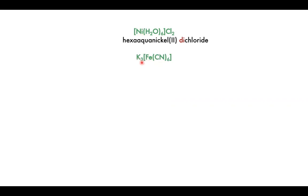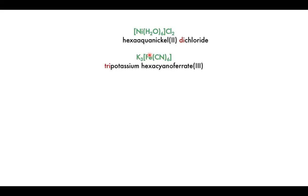The next part is tripotassium hexacyanoferrate(III). This is iron(III) because cyano ligands are minus one each — six of them gives minus six total, plus three gives minus three total for the complex — and we balance that with three potassium ions to get a neutral overall complex. By combining knowledge that potassium is always plus one and cyano ligands are always minus one, we can work out the oxidation state. So tripotassium — the 'tri' is not necessarily always required in the written name, but it's good practice to include it.